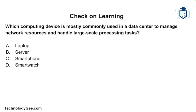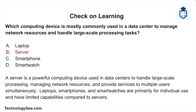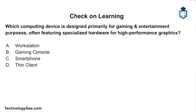Next question: which computing device is most commonly used in data centers to manage network resources and handle large-scale processing tasks — a laptop, a server, a smartphone, or a smartwatch? The correct answer is a server. A server is a powerful computing device used in data centers to handle large-scale processing, manage network resources, and provide services to multiple users simultaneously. Laptops, smartphones, and smartwatches are primarily for individual use and have limited capabilities compared to servers.